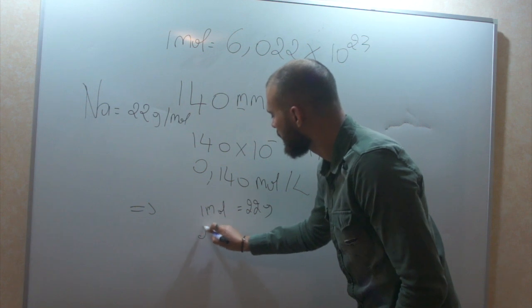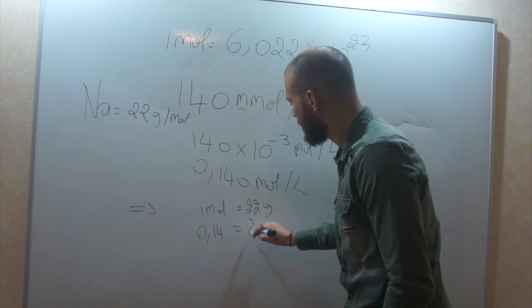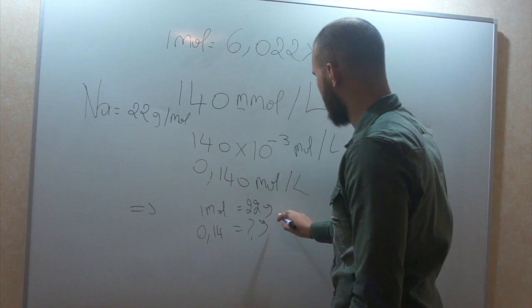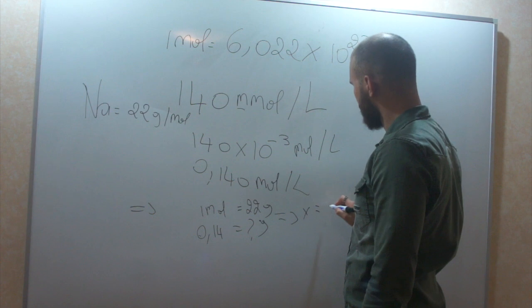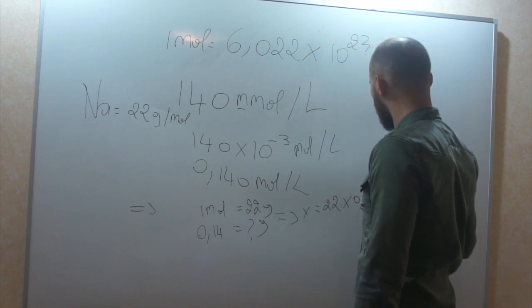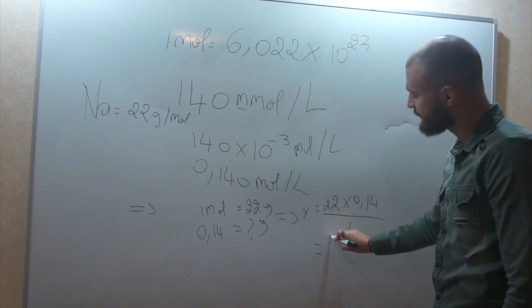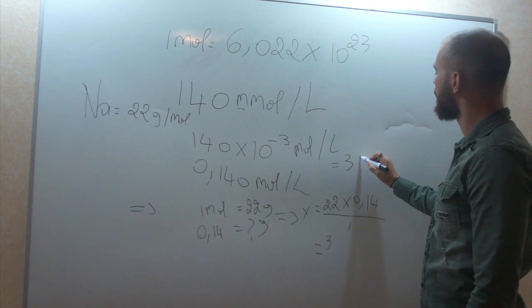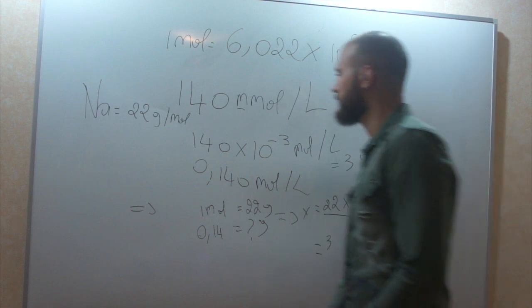And we have like 0.14, let's say. So, what's the weight? And now it's very simple. x equals 22 multiplied by 0.14 divided by 1. It's 3. The answer is 3. So, you have 3 grams per liter of sodium. It's magic.